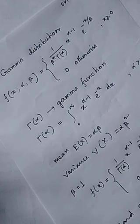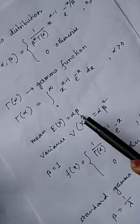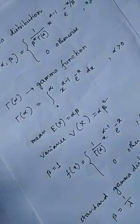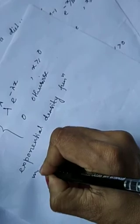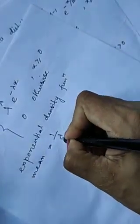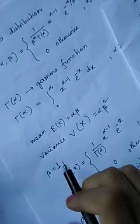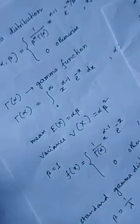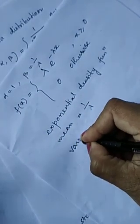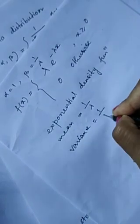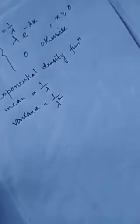You have noticed how you get the exponential distribution from the gamma distribution, and exponential is also a continuous distribution. If you take alpha as 1 and beta as 1 by lambda, then the mean for exponential is alpha times beta equals 1 by lambda, and the variance is alpha times beta squared equals 1 by lambda squared. Hope you understood.